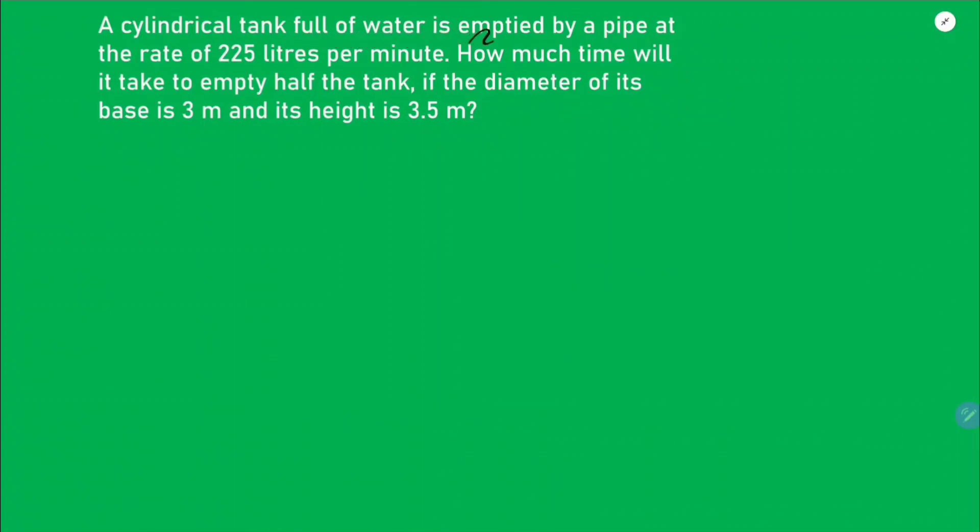A cylindrical tank full of water is emptied by a pipe at the rate of 225 liters per minute. How much time will it take to empty half the tank? The tank dimensions are: diameter is 3 meters, so radius is 3 by 2 meters, and height is 3.5 meters.